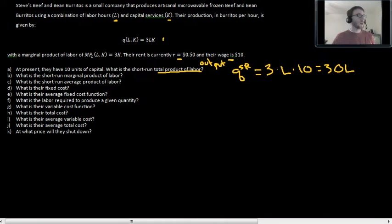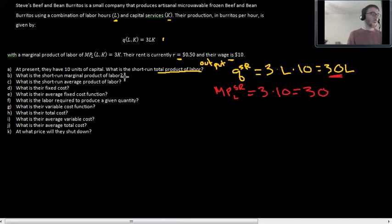Okay, so part B, they want to know what the short-run marginal product of labor is. Again, you can do this with calculus, but if calculus is not your strong suit, then we can just plug it in the marginal product of labor function. We have the marginal product of labor function here. Let me pick another color. MPL equals 3 times K, so marginal product of labor in a short-run. It's going to be 3 times K, which is 3 times 10, or 30. And it's just this number as well. It's very simple calc if you take the derivative of output with respect to labor. Cool, short-run marginal product of labor then is 30.